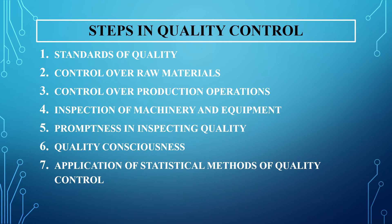The seventh and last step is the application of statistical methods for quality control. There are many statistical tools that can be used for quality control, and when used, they give systematic information to management about the quality of products. The various statistical methods generally used include sampling, frequency distribution, quality control charts, standard deviation, range, theories of probabilities, etc. We will be studying these statistical tools in more detail when we cover the types or methods. These are the seven steps that every organization has to follow for quality control.